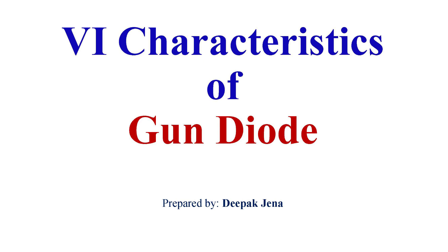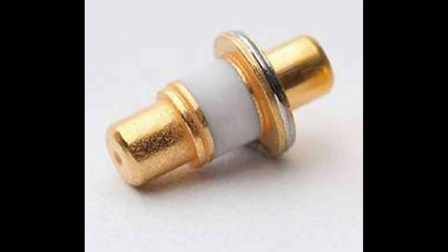A Gunn diode is a form of diode used as a high frequency oscillator. It is somewhat unusual in that it consists of only one type of semiconductor material, whereas most diodes consist of both P and N-type regions.